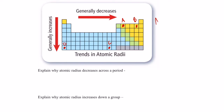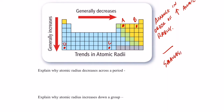Arrange those four elements in order of increasing atomic radius - smallest to largest. Which of the four would be the smallest? It looks like A or B are going to be the smallest because they only have two energy levels. C and D have six or seven energy levels each. So either A or B is going to be the smallest - but which one is smaller, A or B?